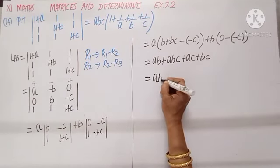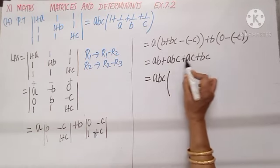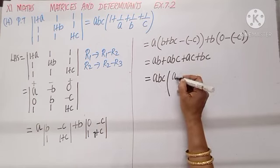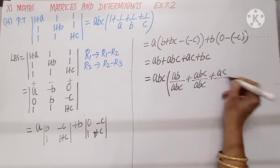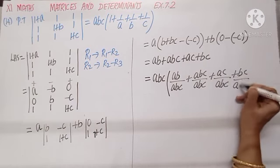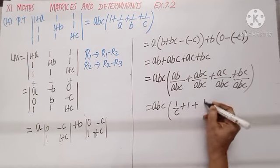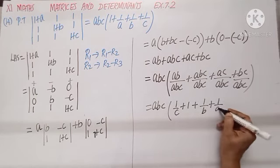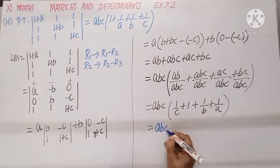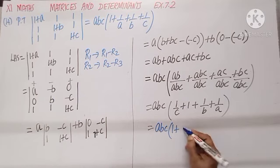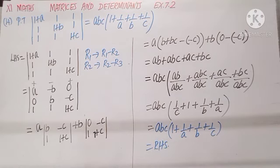Taking abc as common factor: divide every term by abc. We get: ab/(abc) = 1/c; abc/(abc) = 1; ac/(abc) = 1/b; bc/(abc) = 1/a. Rewriting in order: abc × (1/a + 1/b + 1/c), which matches the RHS. Hence proved. The key technique in this problem: when there are many ones, subtract adjacent rows to cancel them, creating zeros, then expand and factor out abc.